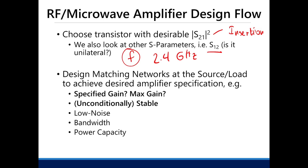After that, you need to check your specified gain. Do you need the specified gain? What is the maximum gain? Can you achieve the specified gain given the maximum gain? Next is the stability of your amplifier, which we will talk about in the succeeding slides. Other parameters include whether you want low noise, high bandwidth, larger power capacity, and so on. But the important ones are gain and stability.